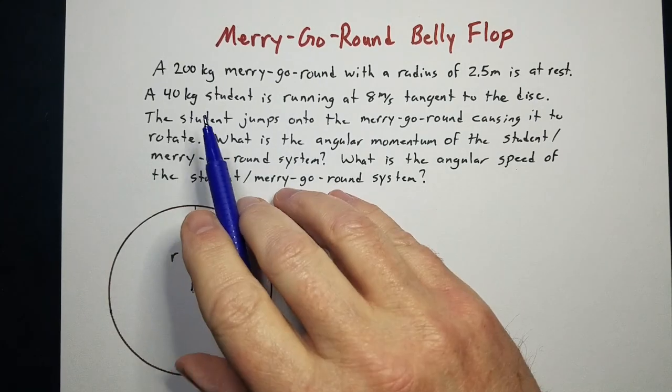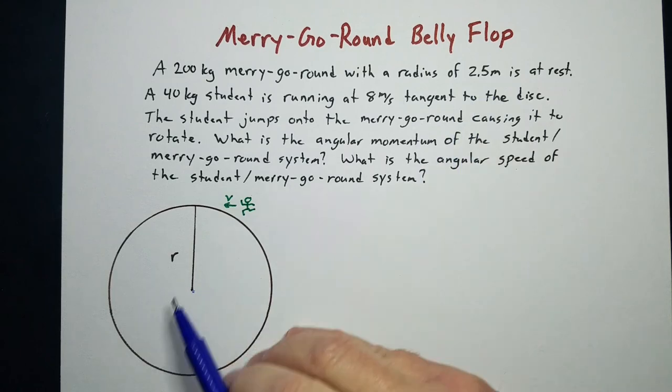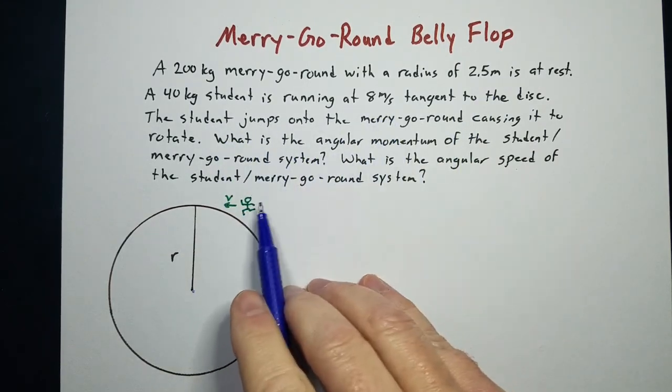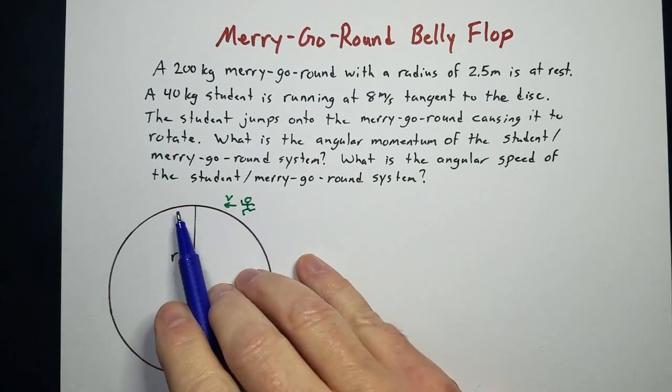We've got a 200-kilogram merry-go-round that's 2½ meters in radius. A 40-kilogram student is running at 8 meters per second tangent to the circle and jumps onto the merry-go-round.